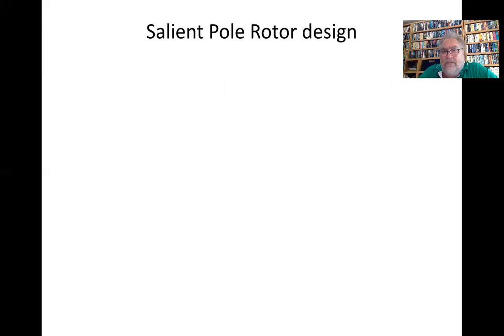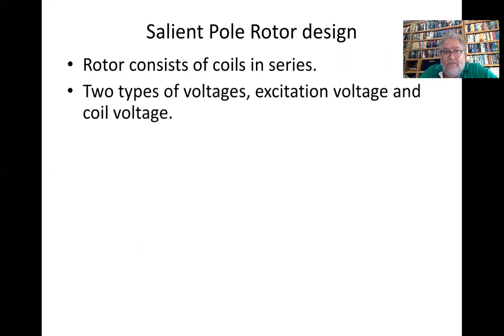Now if you look at salient pole rotor design, the rotor consists of coils in series, two types of voltages: the excitation voltage and the coil voltage. So R_coil = ρ l_mt times the number of turns per coil over the area of the conductor.